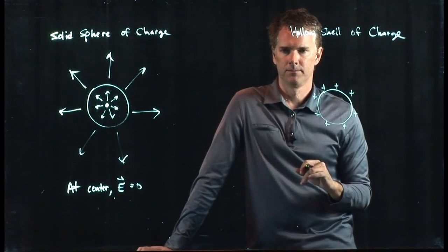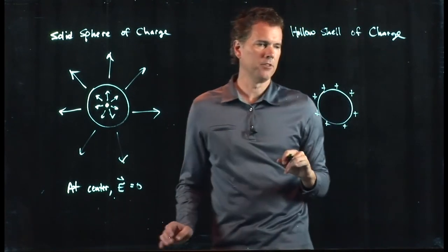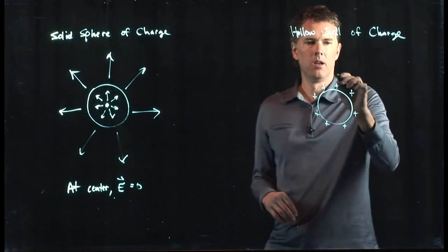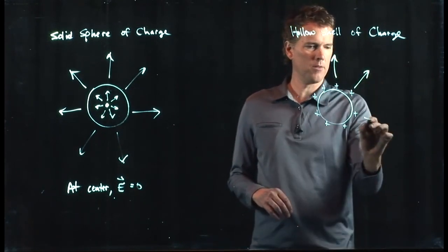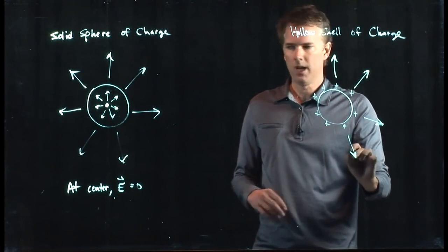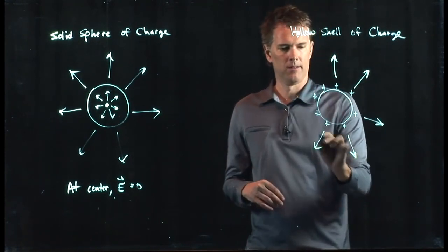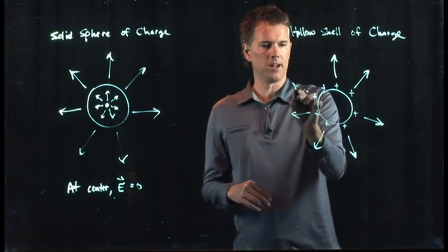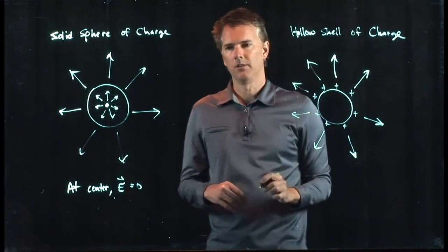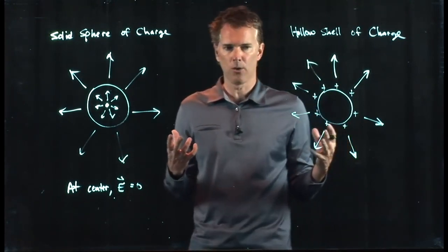Should it still be going up? Yeah. She said, shouldn't it still be going up here and away from the charges there, right? Radially outward. It should look very similar to that. And that is exactly right. It's always pointing radially out from the sphere.